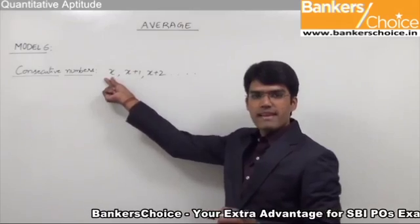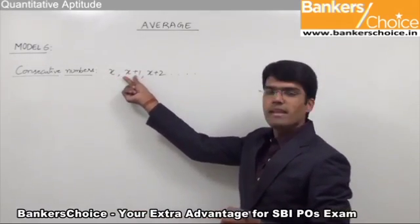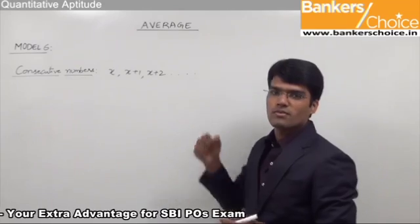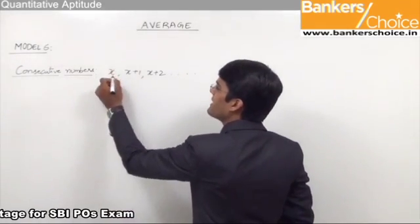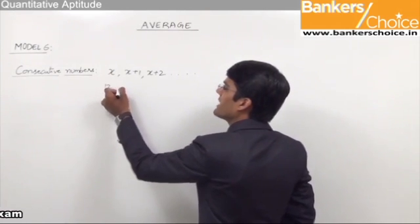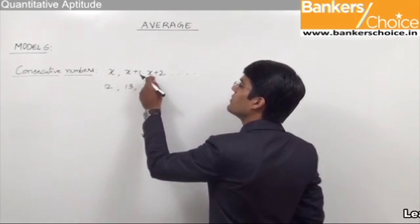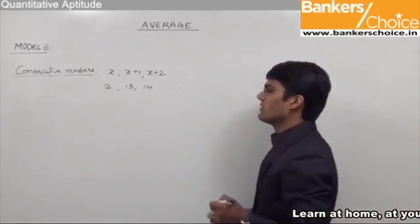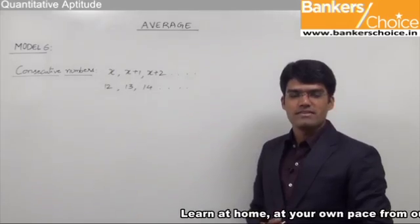If the first number is x then the second consecutive number will be x plus 1, the third one will be x plus 2 and so on. Let us take any value in place of x. Let us say x is equal to 12. So the next number will be 12 plus 1, that is 13, then 12 plus 2, that is 14 and so on. This is how we get a set of consecutive numbers.